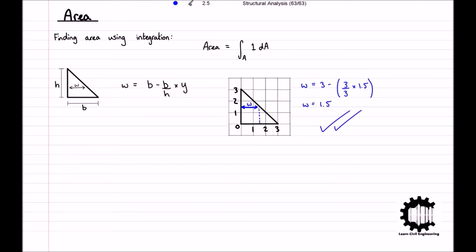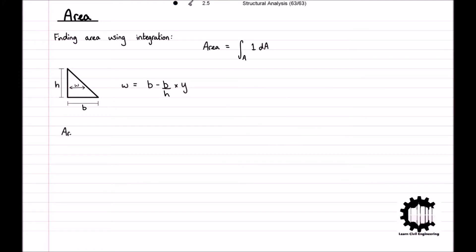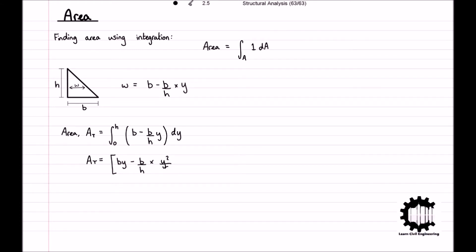Now that is confirmed, we can substitute this formula into the integral. So the area of a triangle, AT, is equal to the integral of (B minus B over H times Y) with respect to Y, with boundary limits of Y equals 0 and Y equals H. Carrying out the integration, we get AT equals BY minus (B over H times Y squared over 2), evaluated from Y equals 0 to Y equals H. Substituting in our boundary limits, AT equals BH minus BH over 2, which simplifies to B times H divided by 2. This is the standard formula for the area of a triangle.